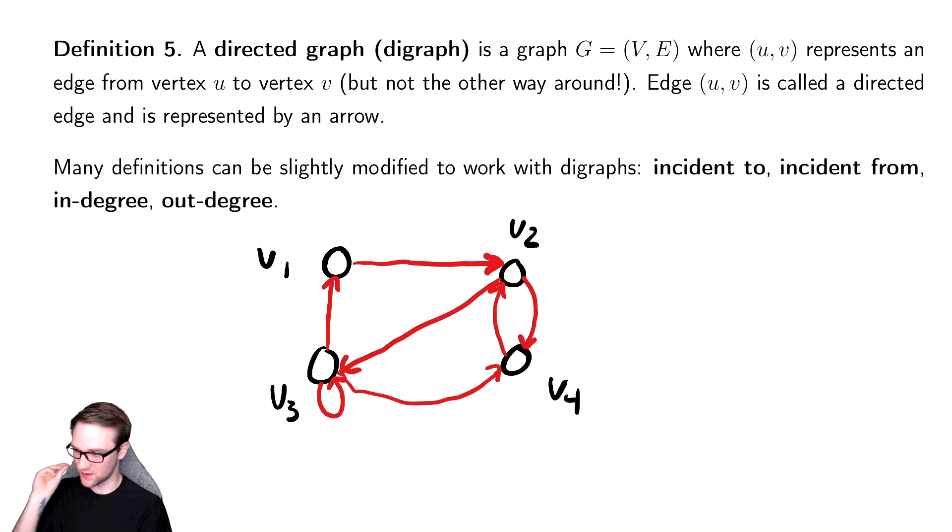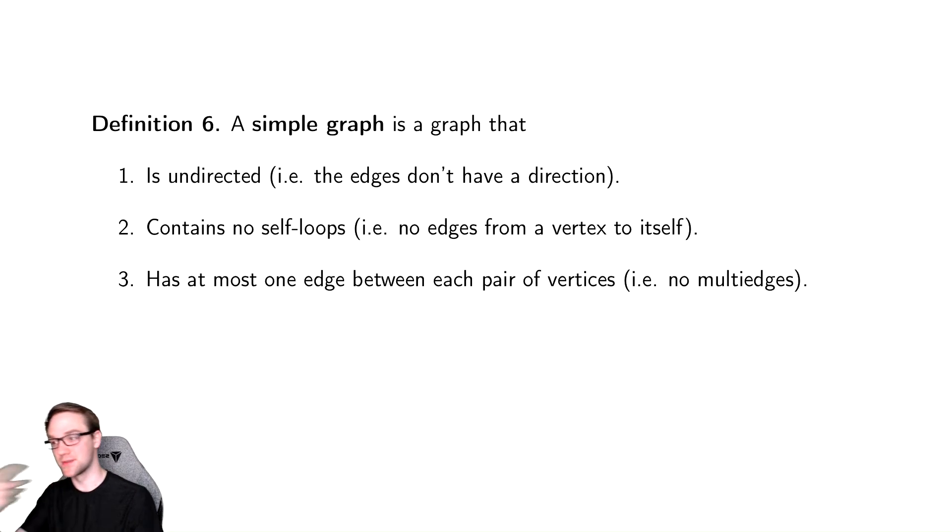However, directed graphs are sort of a special case that we will specifically call out. In general, we're going to assume things are what are called simple graphs. And if we scroll down, we notice that we have something called a simple graph here. A simple graph has no directionality, no self-loops, and there's at most one edge.